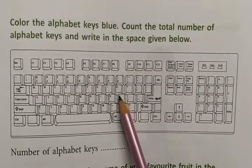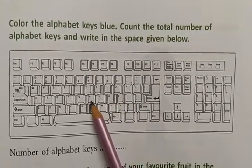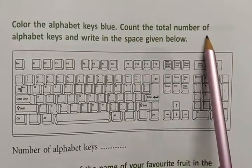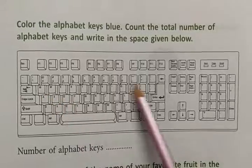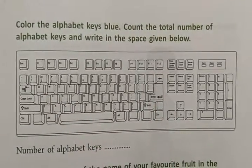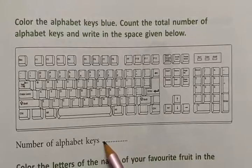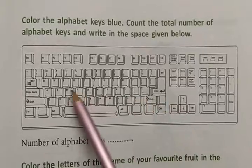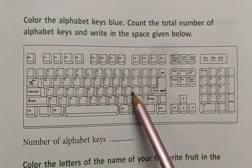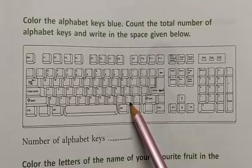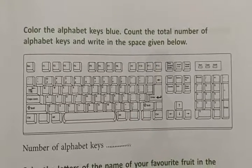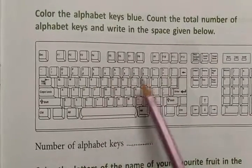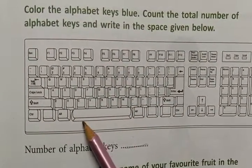All of you need to do blue color. Which color? Blue color. What do we need to do? Count the total number of alphabets. How many alphabets are there? Count them all. We need to write the total in the blank. First you have to take all the alphabets from the alphabet key — blue color. Count how many alphabets there are.